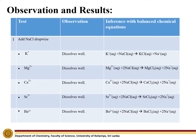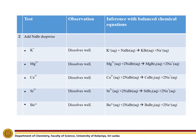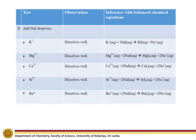Observation and results: When we add sodium chloride dropwise to the following cation solutions, all the cation solutions will give soluble salts. All the cation solutions will also give soluble salts with sodium bromide, so all of them will dissolve well. Likewise, when we do the experiment using sodium iodide, all the cation solutions will give soluble salts.